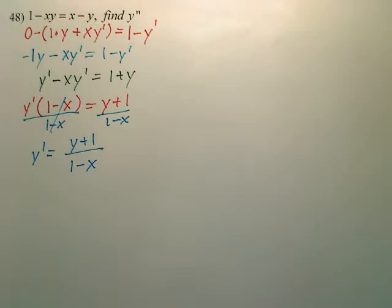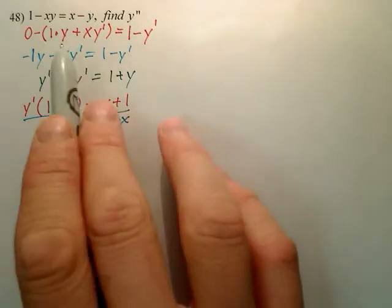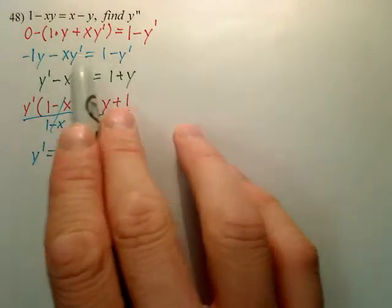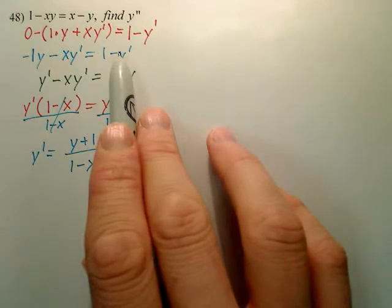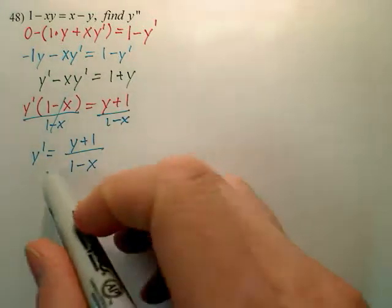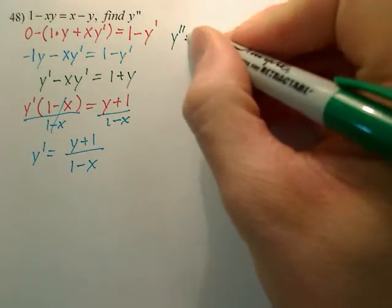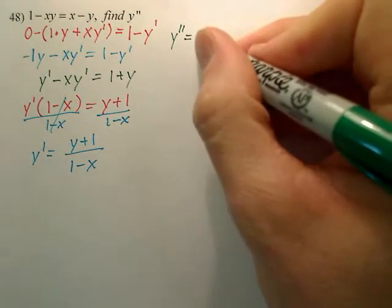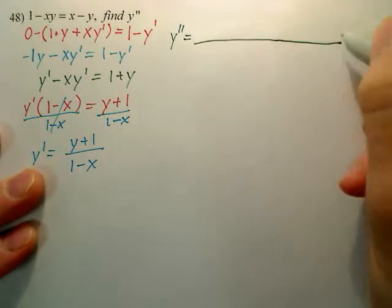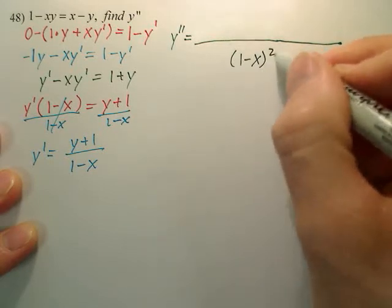Now we want to derive that again. So I see a quotient rule. Now we could go back up here and derive this if we wanted to, implicitly, or even this, but let's just do this one. So to derive this, we're going to have y second prime is equal to the bottom is simply going to be 1 minus x squared.